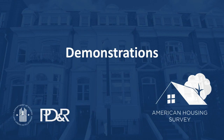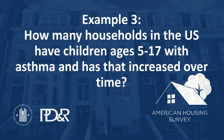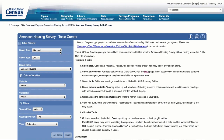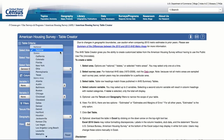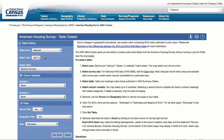Now let's see how to find data for a topic that isn't available in every survey year. Example 3: How many households in the U.S. have children ages 5 to 17 with asthma, and has that increased over time? Select the Area: National, and select the Year: 2015.